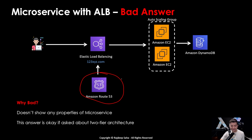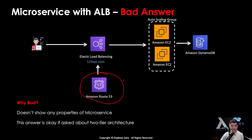That answer is okay if the interviewer asks about a two-tier architecture — you could say the first tier is a load balancer handling all traffic with business logic running in Amazon EC2 with auto scaling, and the database layer is Amazon DynamoDB storing all the data. But it is not a good answer for microservices.